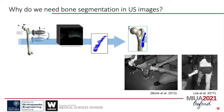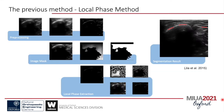Tracking hip position during a walk can eliminate artifacts from skin markers. Eventually, we will want to bring this system to clinical settings. A vital step is the ability to label bones in ultrasound images quickly, ideally in real-time if possible. Our previous method has three main steps: pre-processing, image masking, and local phase extraction.